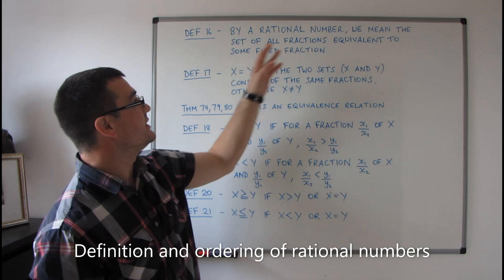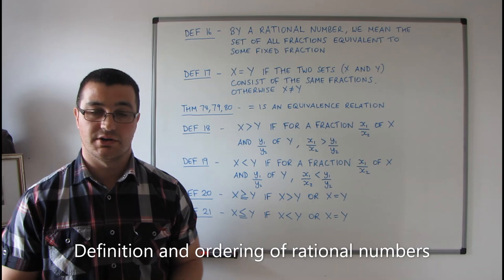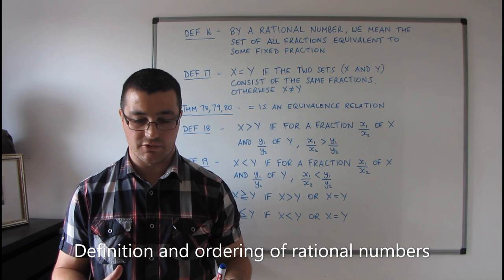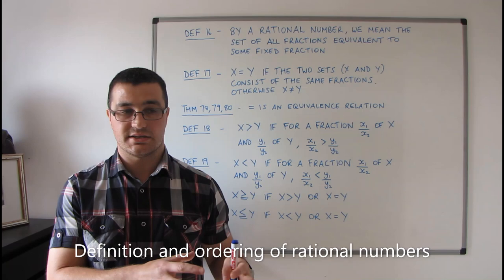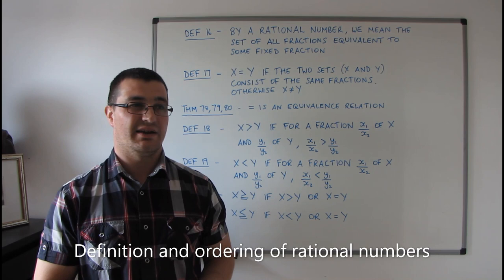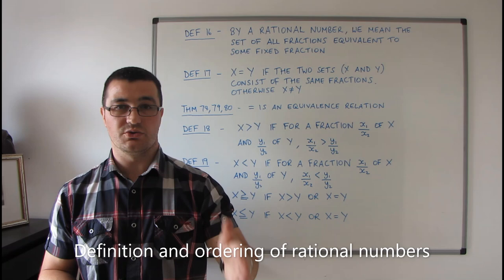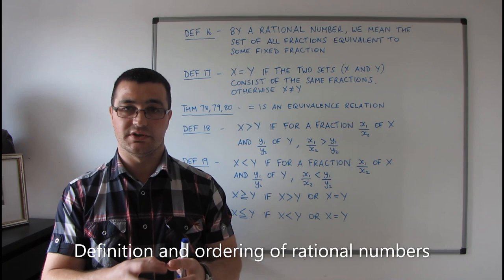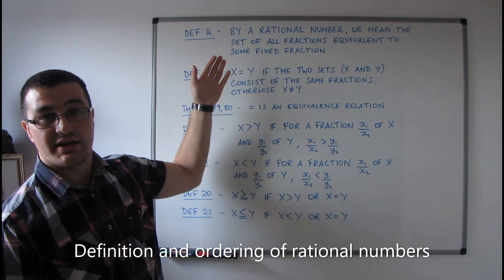The rational numbers are defined as follows. By rational number we mean the set of all fractions equivalent to some fixed fraction. Under the definition of equivalence — I think it was definition 8 — fractions naturally lump together in equivalence classes. The rational numbers are these separate equivalence classes. For example, a half is equivalent to two quarters, which is equivalent to three sixths, and there's an infinite set of fractions all equivalent to each other, forming an equivalence class we just call a half.